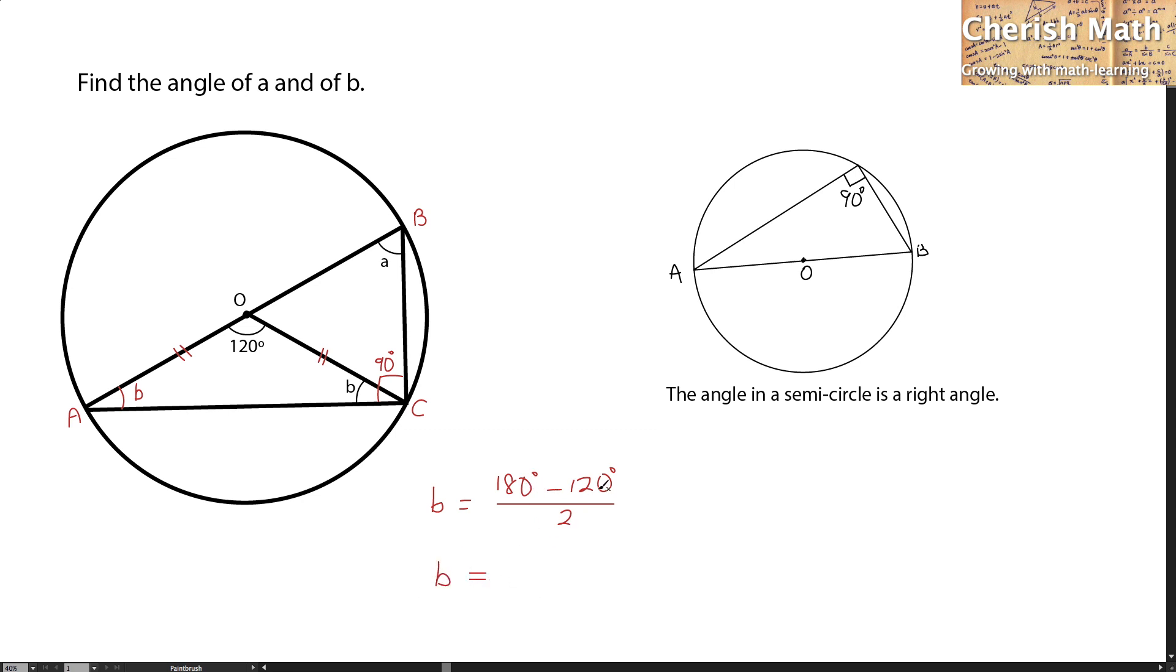And I got the value of B here is 180 minus 120 is 60. 60 divided by 2, I got 30 degrees. So the B is in fact 30 degrees for both sides of the angle.